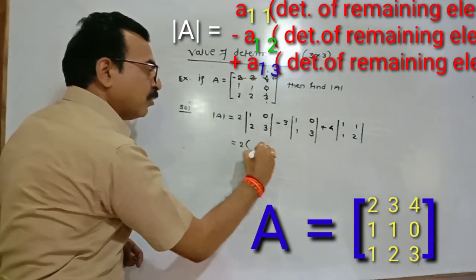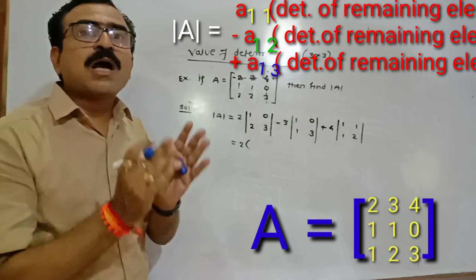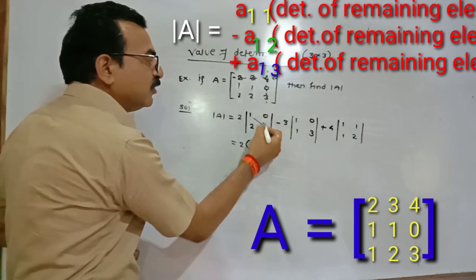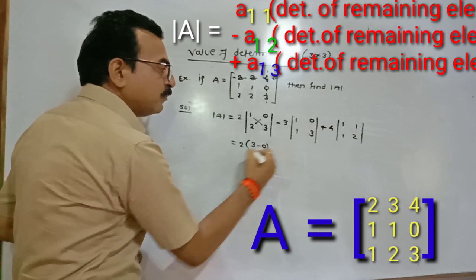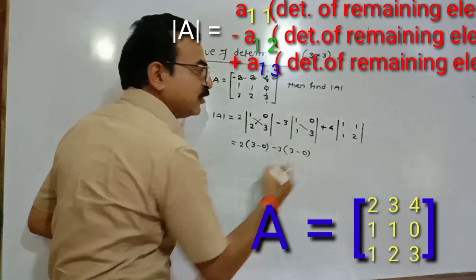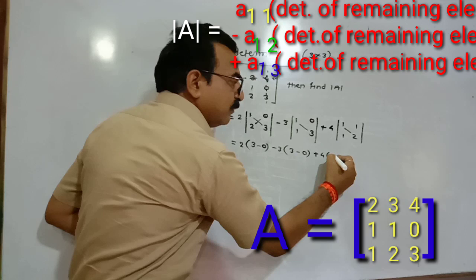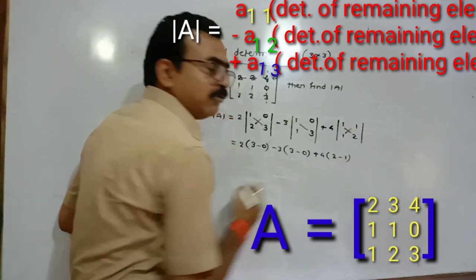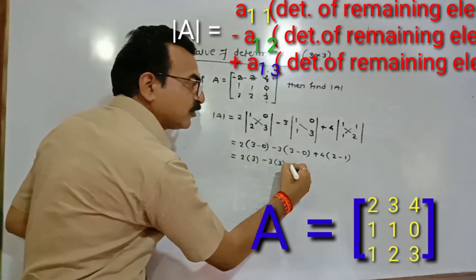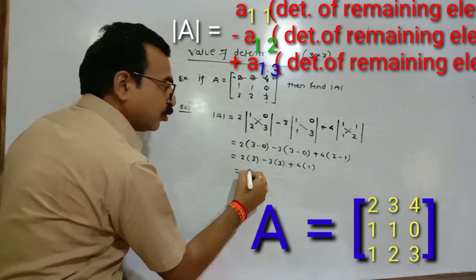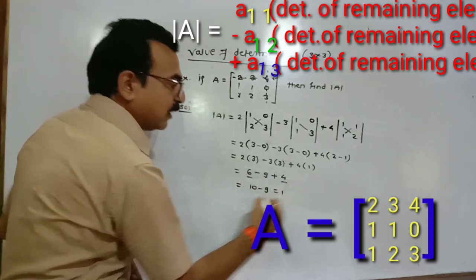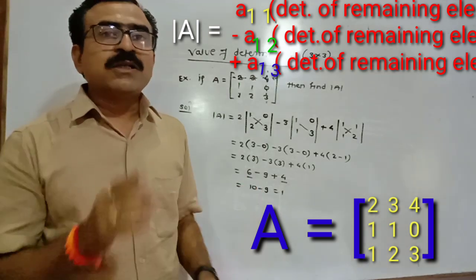Now solve it. From previous knowledge, calculate the 2×2 determinants using cross multiplication. 3 into 1 is 3 minus 2 into 0 is 0, minus 3 times: 3 into 1 is 3 minus 1 into 0 is 0, plus 4 times: 2 multiplied by 3 minus 0 gives 3; 3 multiplied by 3 minus 0 gives 3; 2 minus 1 is 1. So 2 threes are 6, minus 3 threes are 9, plus 4 ones are 4. 6 plus 4 is 10, minus 9 equals 1.